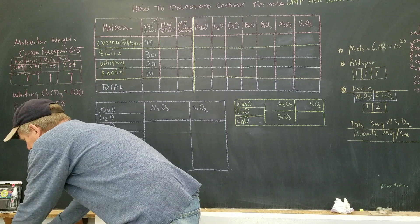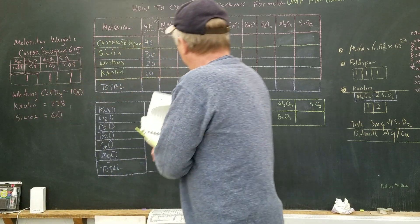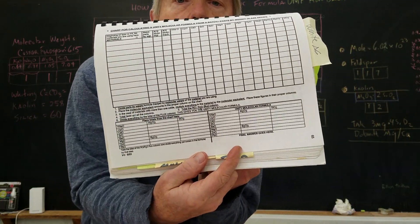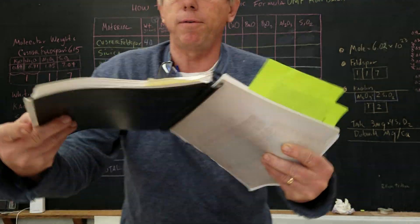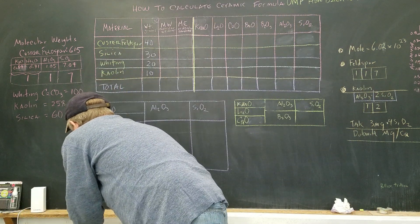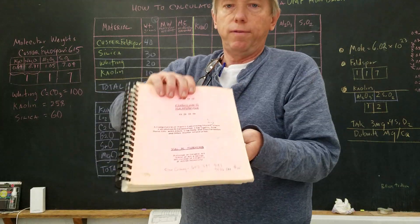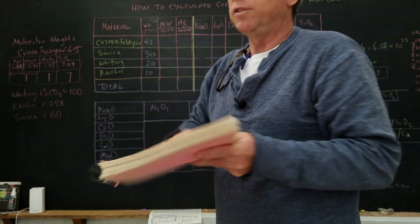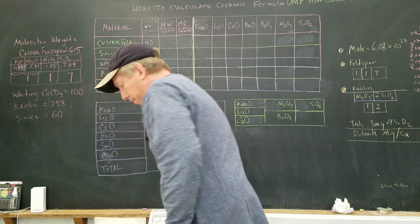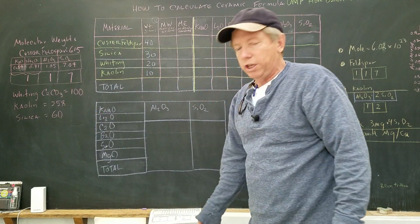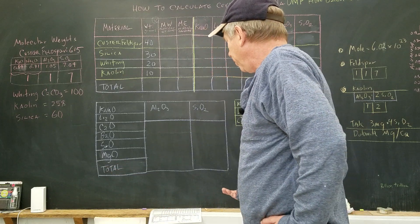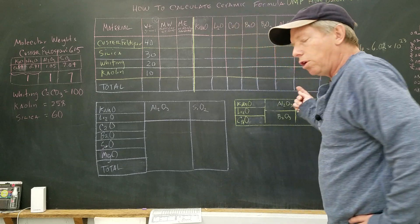I'm going to show you this little chart I'm using, right here on the board. You can get it from Val Cushing's book. I took his class in 1994 or so. There are several ways to do this — this is just the way he does it.